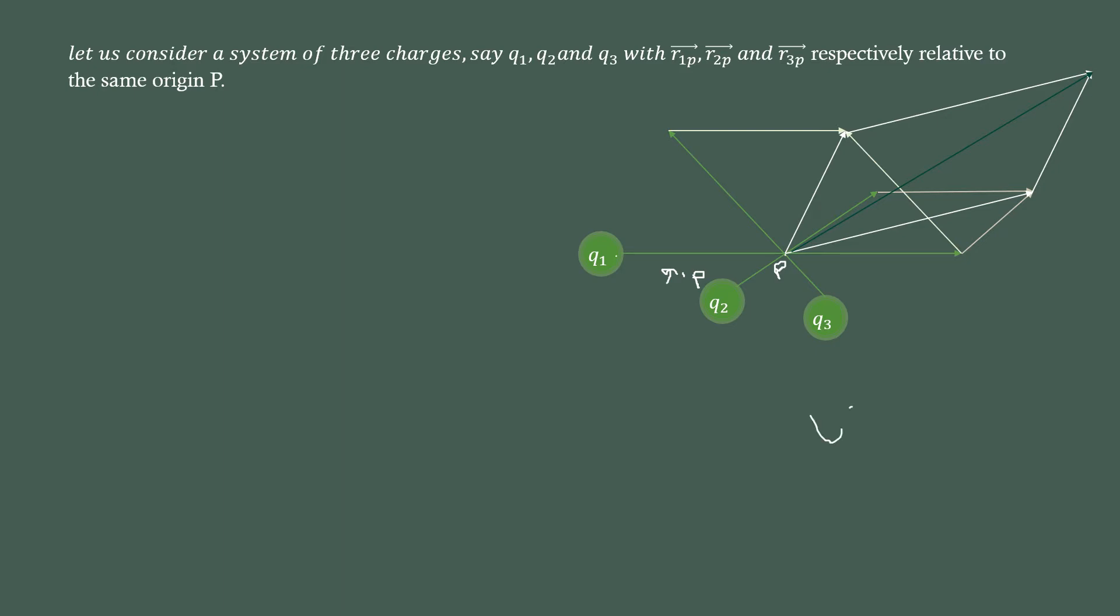E is equal to 1 by 4 pi epsilon naught into q by r square. The first charge particle's electric field, E1 is equal to 1 by 4 pi epsilon naught into q1 divided by r1 square into r1 cap.